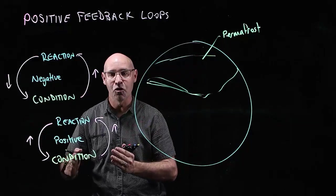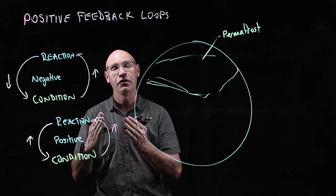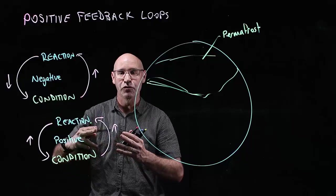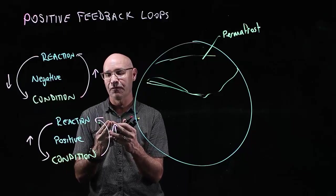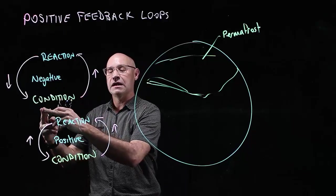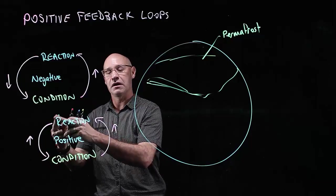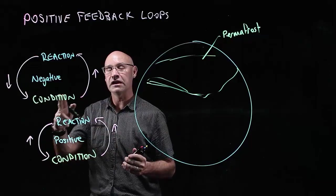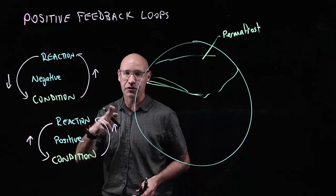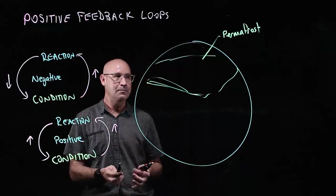Therefore, more bacteria decompose more of the permafrost, releasing more carbon dioxide into the atmosphere, increasing the temperature, and defrosting more permafrost. Can you see how it just spins out of control? It's a positive feedback loop.